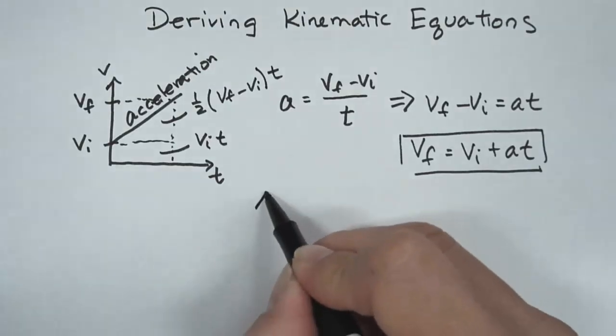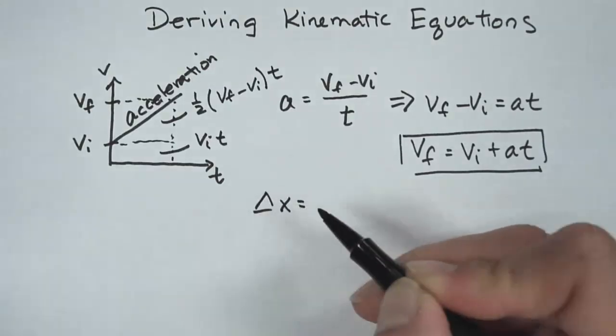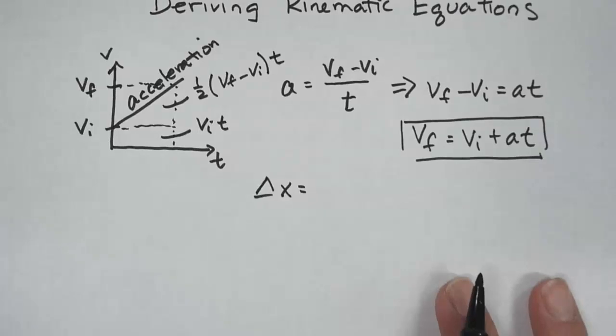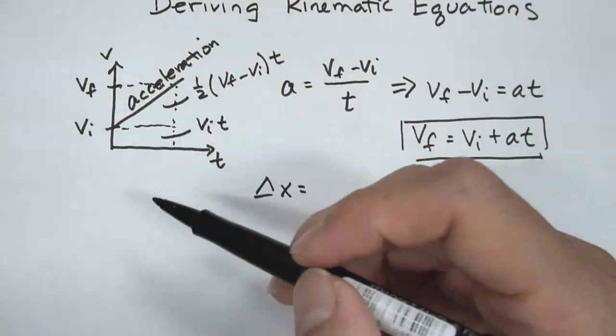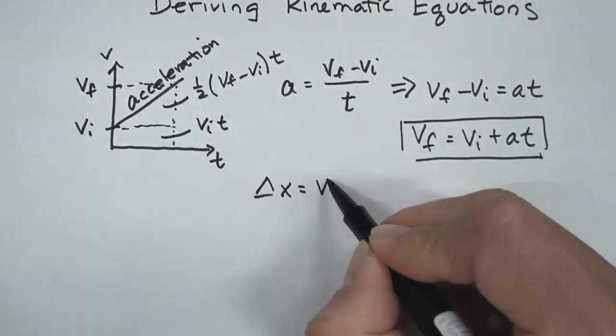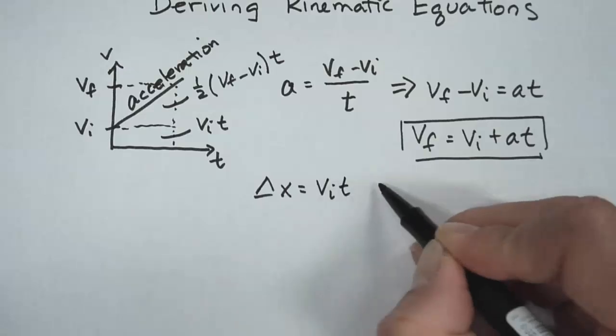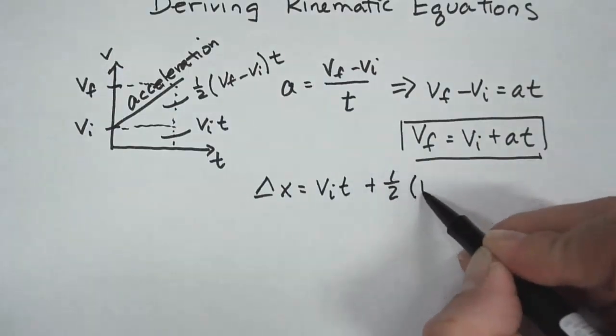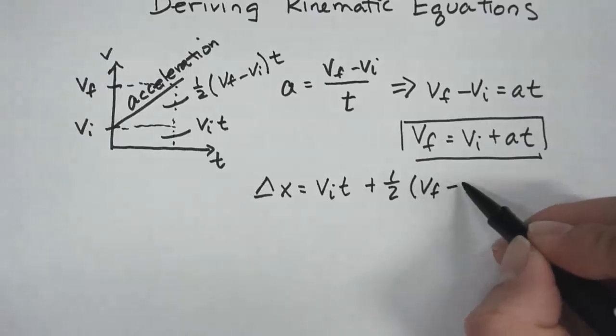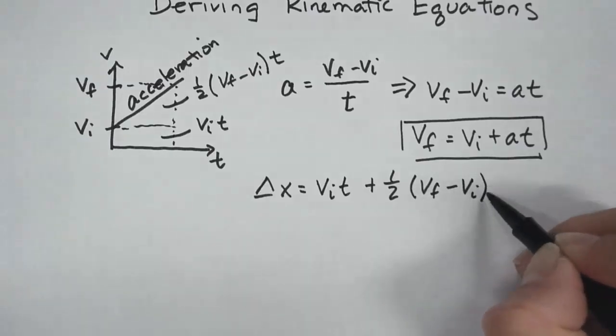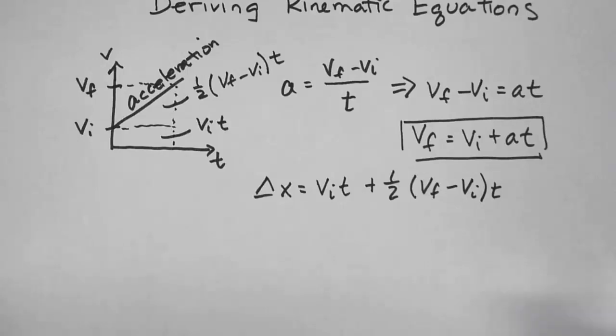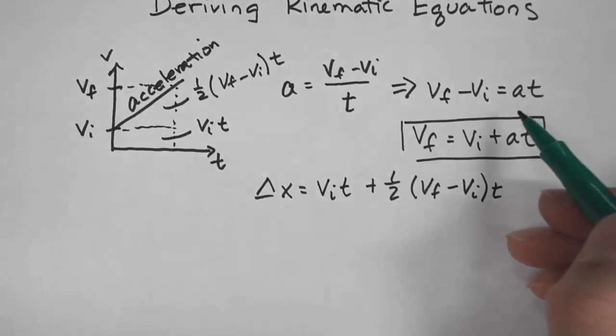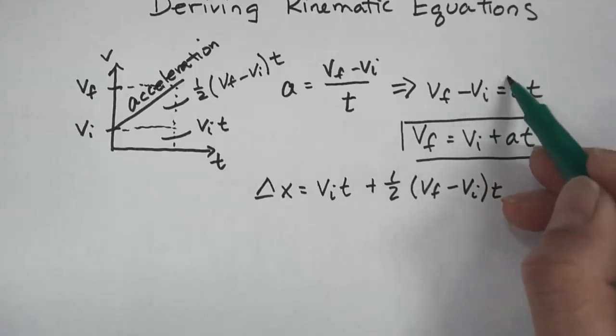So delta x is equal to the displacement, is equal to the area under the curve on a velocity versus time graph. So I'm just going to add these two areas: vi t plus 1/2 vf minus vi times t. Now if you look up here, you'll notice that vf minus vi is just at.